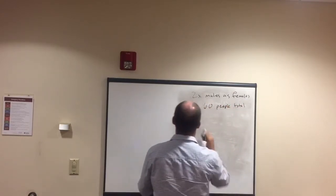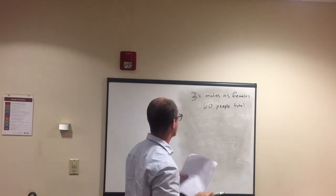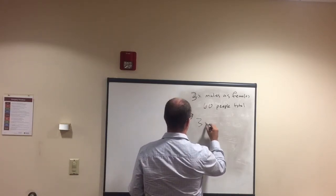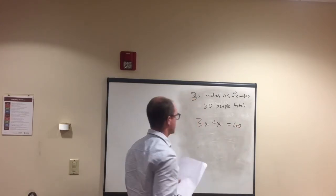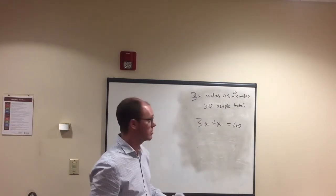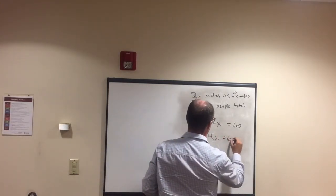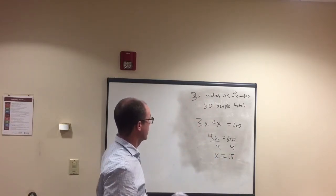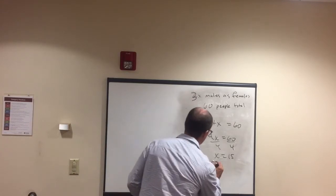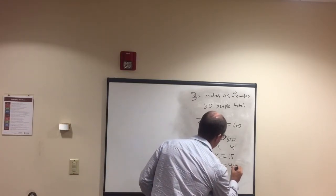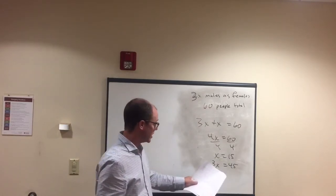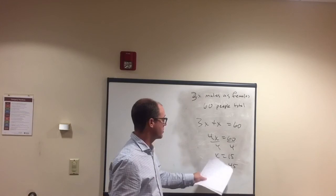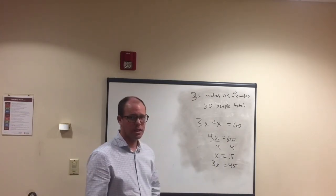What if it was three times as many males as females with 60 total? Same approach: 3x plus x equals 60, so 4x equals 60, divide by 4, and x equals 15 — that's females. Males are 3x, which is 3 times 15 equals 45. Check: 45 plus 15 is 60, and 15 times 3 is 45, so we have three times as many males as females. Everything works out.